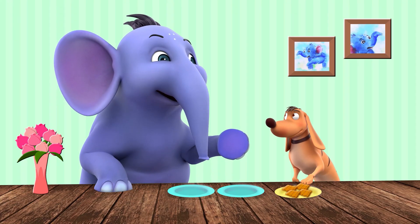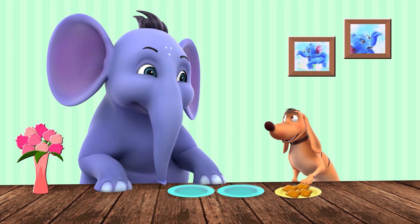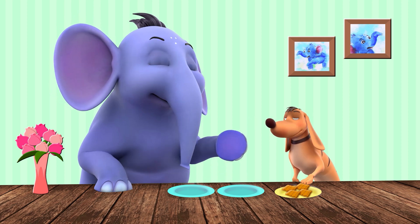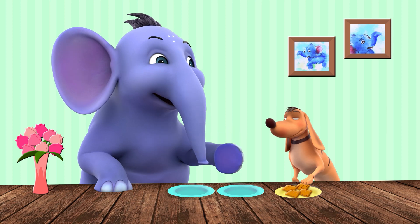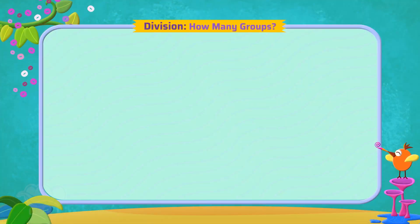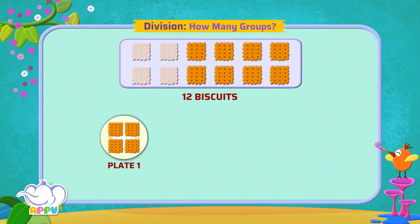Come on Tiger, let's try to divide these items. It's fine Appu, you can do it. Don't be greedy Tiger, learn to share. Let's do it together. There are 12 biscuits in all. Tiger wants to put...